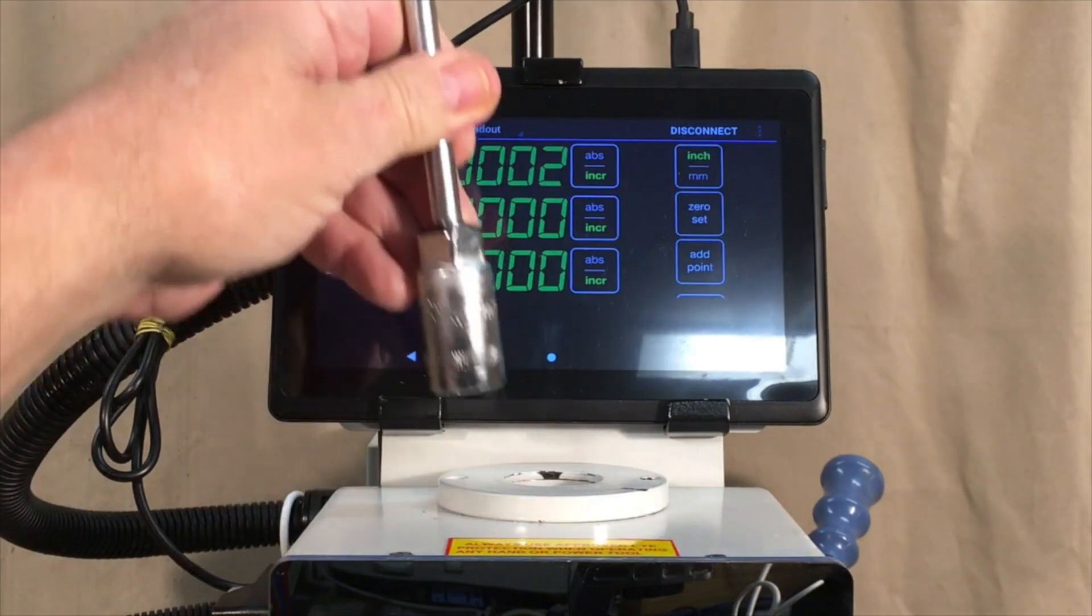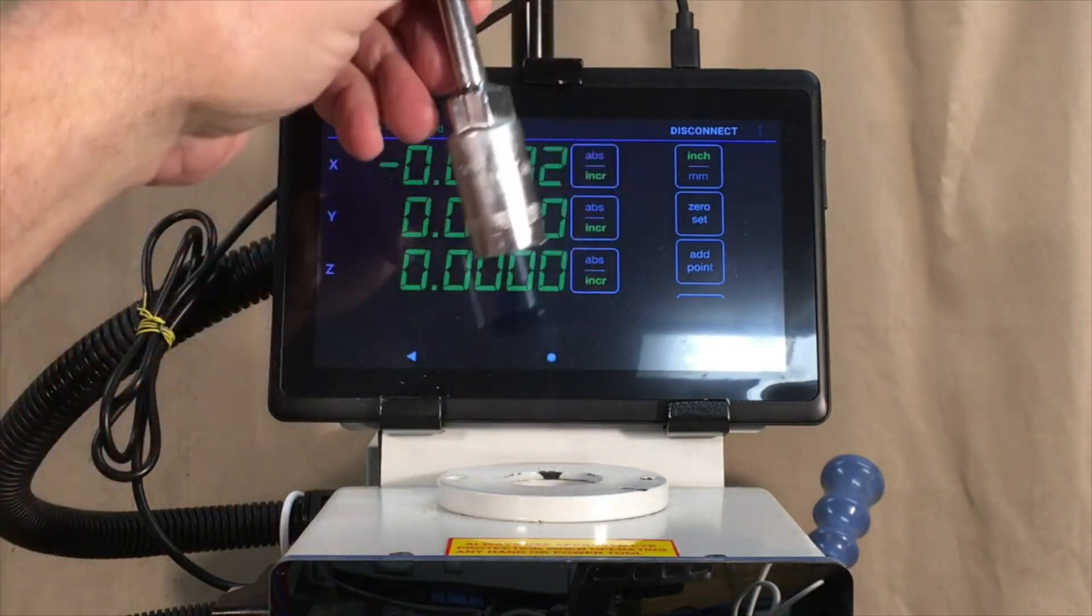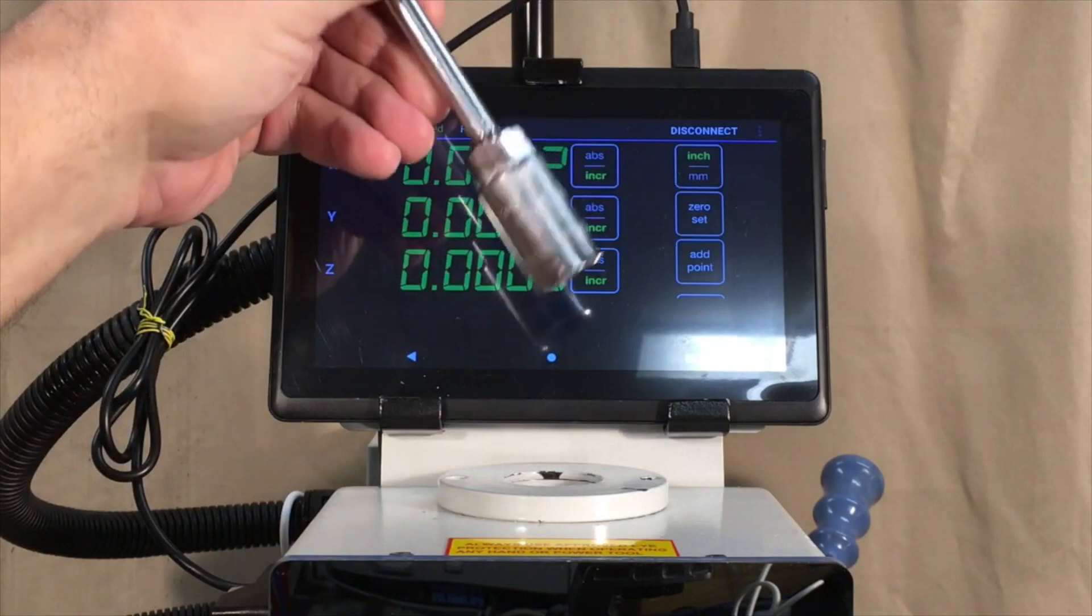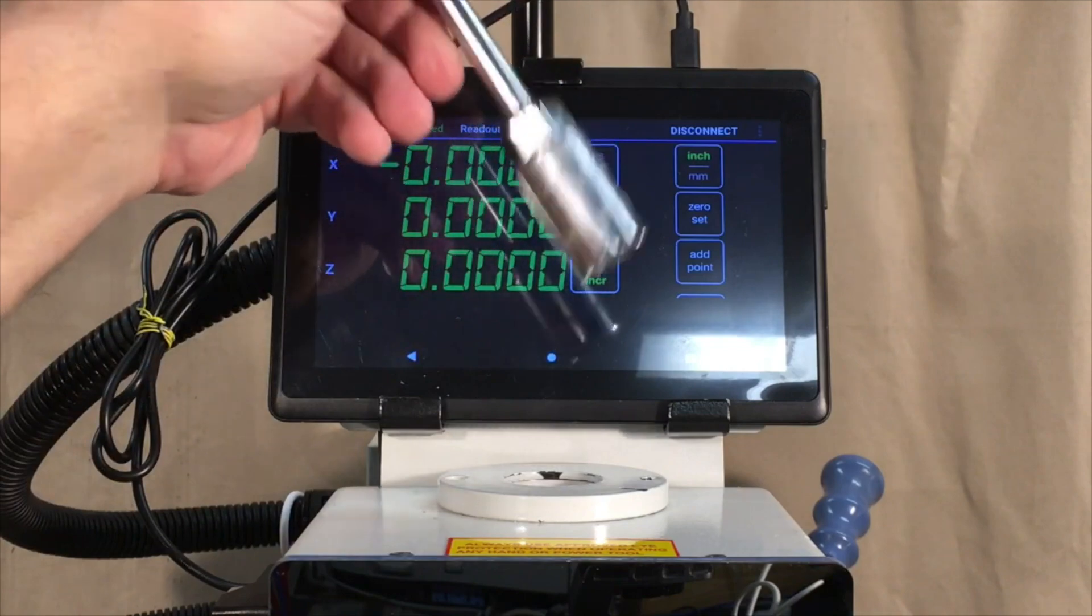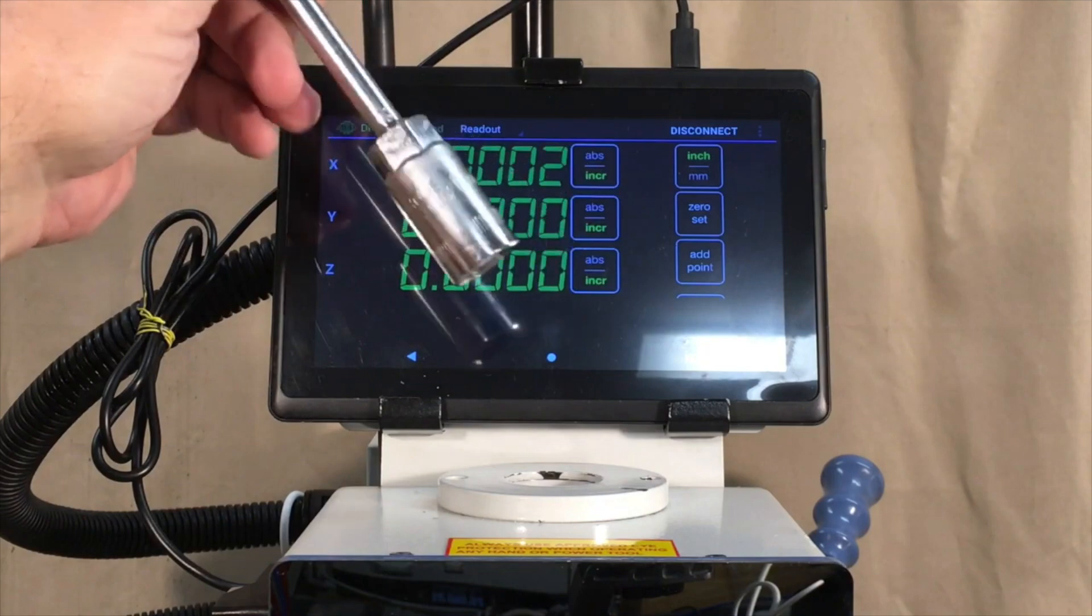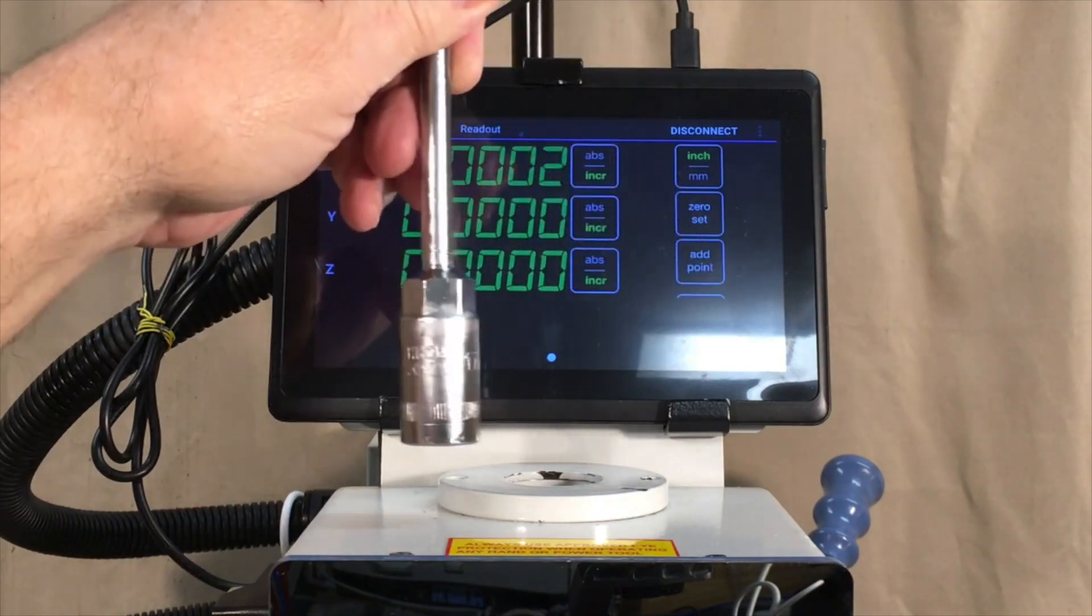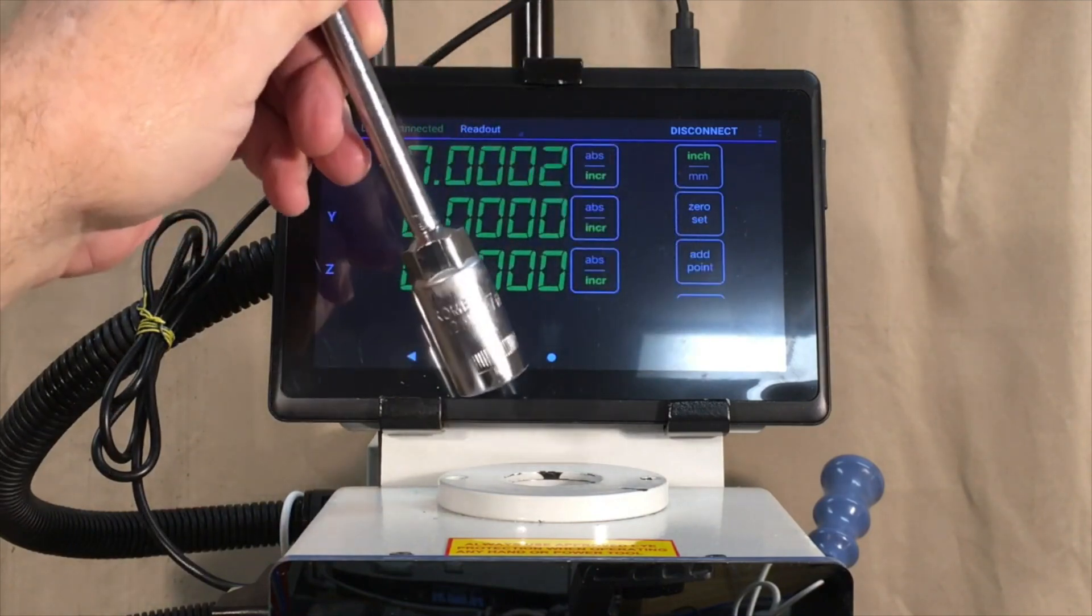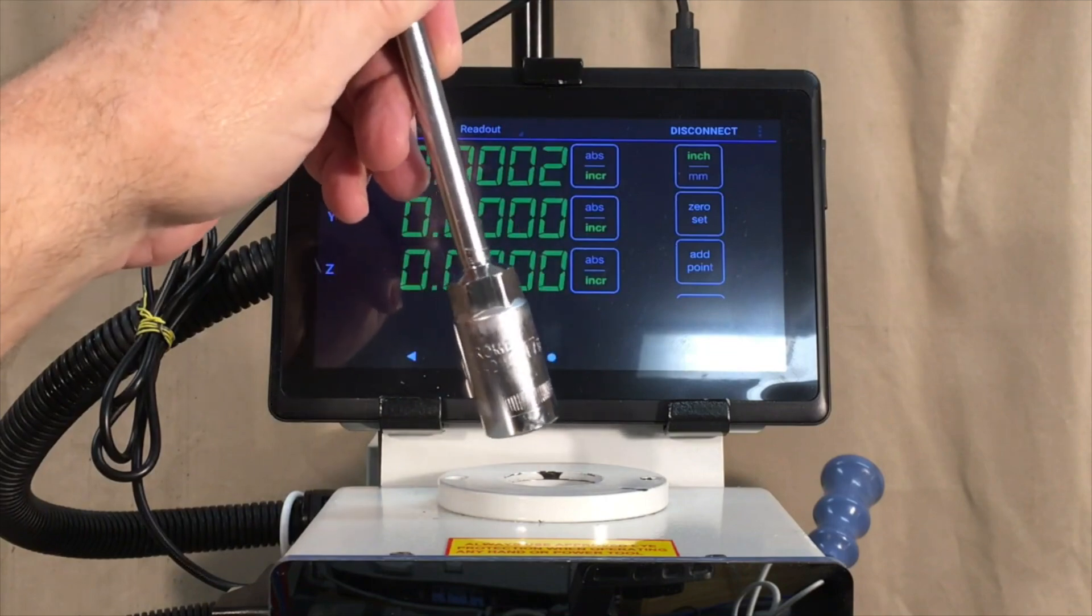In addition to that, I'm concerned that as I reach up with this T-handle wrench, that there's a possibility that sooner or later I may accidentally whack the face of the DRO with this wrench and cause the display to be cracked. So I started thinking about what I might do to relieve some of those concerns.